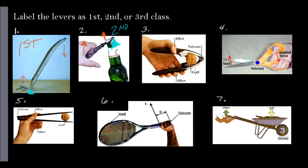Number three: the fulcrum is labeled for you, you have the load or output next to the fulcrum, and then you have your effort at the far end. This looks a lot like what we just did — and that's because this is also a second class lever, like when you're using a nutcracker.